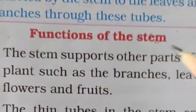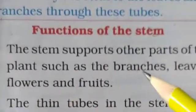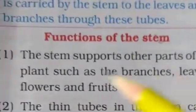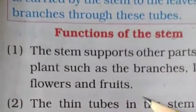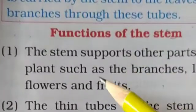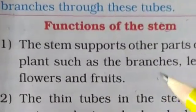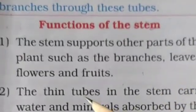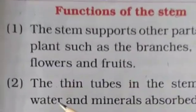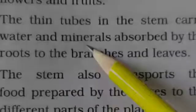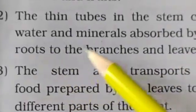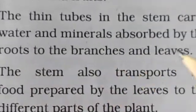Now the functions of the stem. Number one: the stem supports other parts of the plant such as the branches, leaves, flowers and fruits. Number two: the thin tubes in the stem carry water and minerals absorbed by the roots to the branches and leaves.